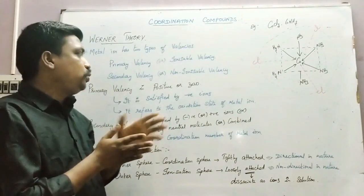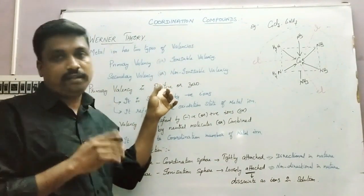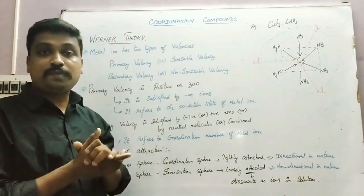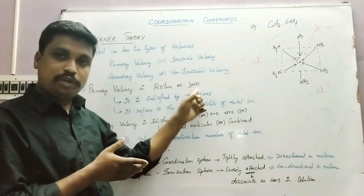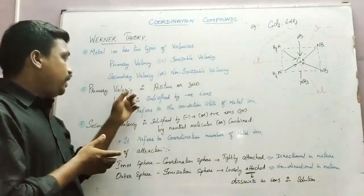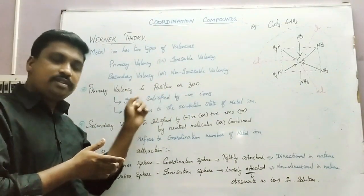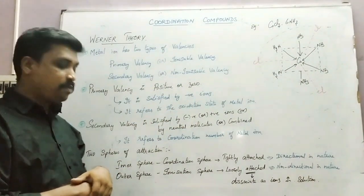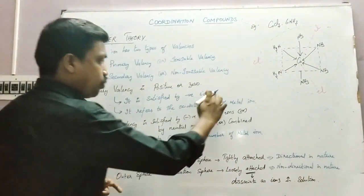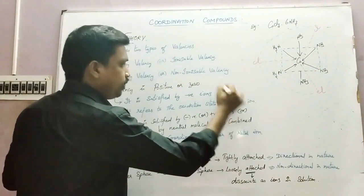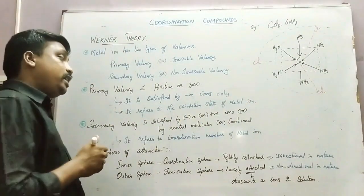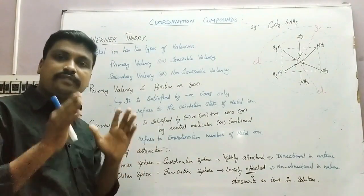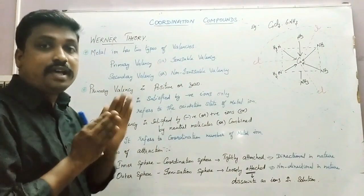Primary valency is due to the positive charge on the metal, or sometimes the metal may have zero charge. If it is a positive charge, it is satisfied by negative charged ions only. It refers to the oxidation state of the metal.